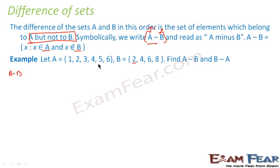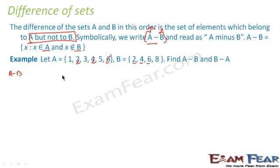For example, B has 2 — we will subtract this. 4 is in B — we will subtract this. 6 is in B — we will subtract this. 8 is not there, so it won't be subtracted. So we subtract 2, 4, 6 from A, and what we get is 1, 3, 5.